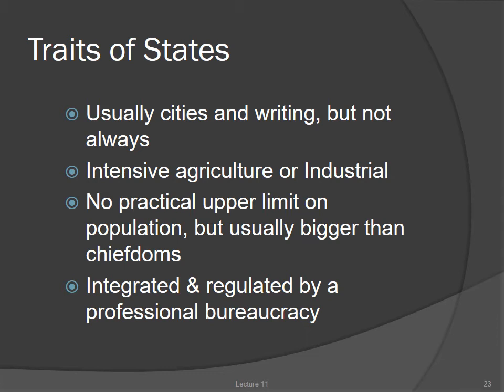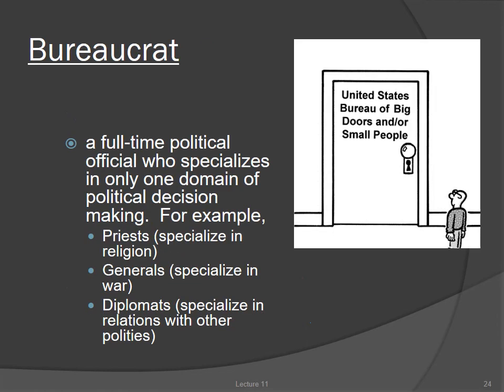The most complex polity that Service described was the state. States are always agricultural or industrial, and because they're so large, integrating and regulating so many people is a difficult task. In addition to a chief-like figure, you get the development of a professional bureaucracy — officials whose job it is to oversee just a portion of the government: priests, generals, ministers of state, and so on. A king or other supreme authority coordinates the bureaucracy rather than managing matters directly.